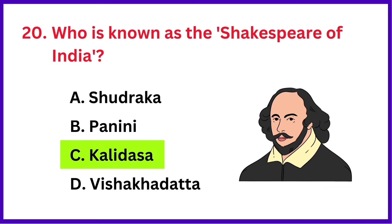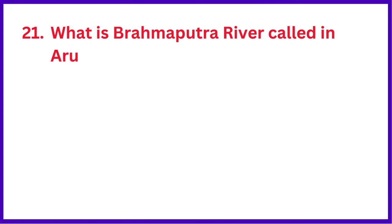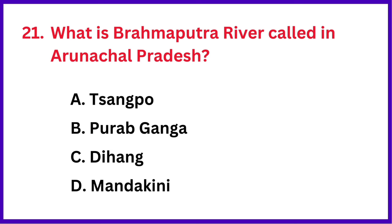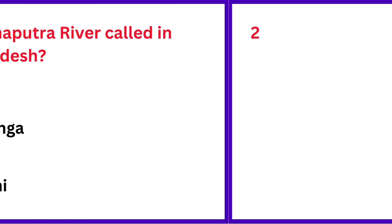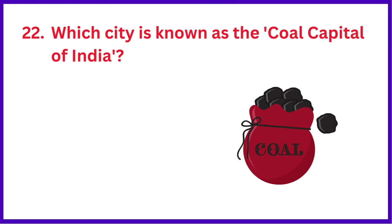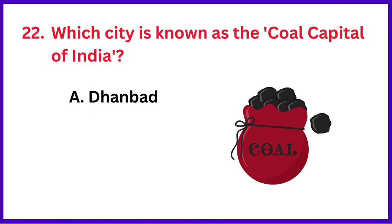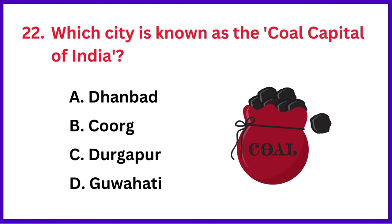The right answer is option C: Kalidasa. What is the Brahmaputra River called in Arunachal Pradesh? The correct answer is option C: Dihang. Which city is known as the coal capital of India? The right answer is option A: Dhanbad.